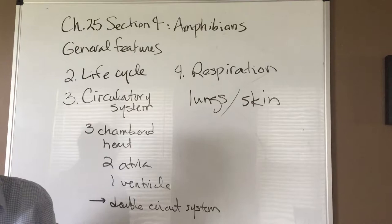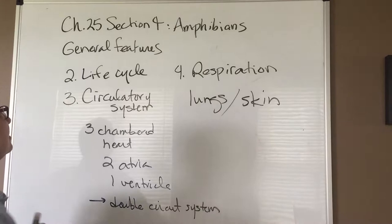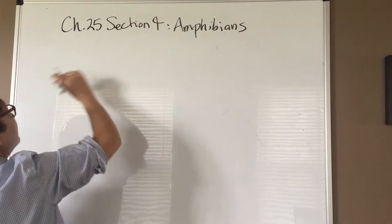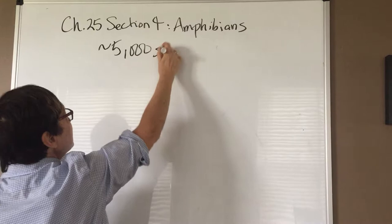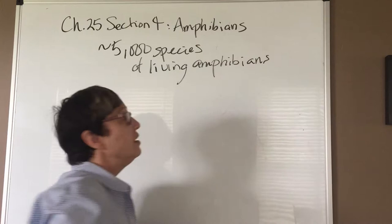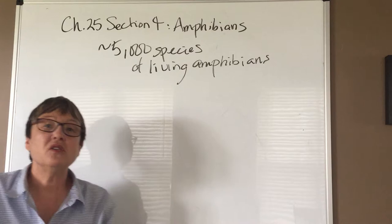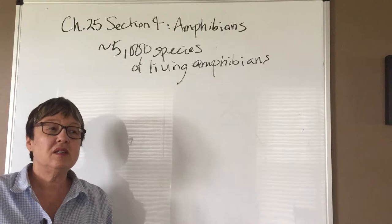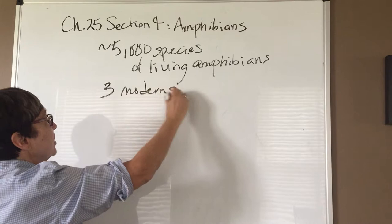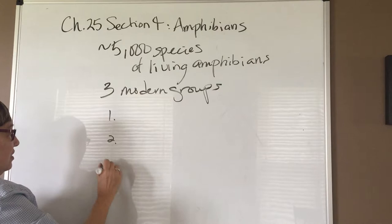Now let's look at the different groups within the amphibians. There are approximately 5,000 species of living amphibians. About 300 to 350 million years ago there were many different amphibian species, but most became extinct. At present we have only three modern groups, which are actually orders.